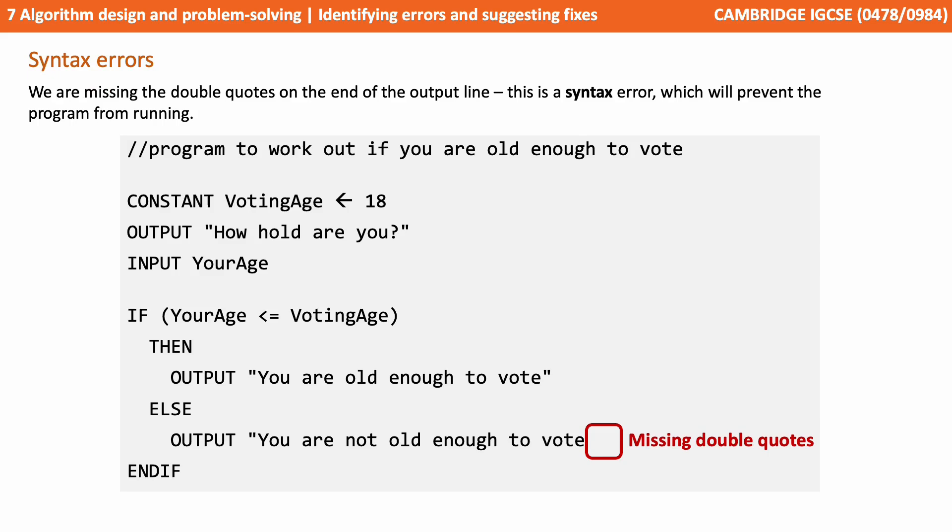We've missed the double quotes on the end of that output string: 'You are not old enough to vote.' Again, that's a syntax error — it would prevent the program from running. So we simply pop those in.